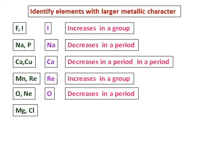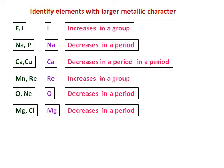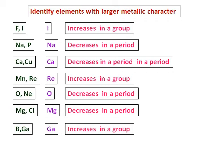Between magnesium and chlorine, magnesium is obviously the answer because magnesium belongs to group 2 and chlorine belongs to group 7. Always have a periodic table handy to answer these questions. Between boron and gallium, gallium has the larger metallic character because metallic character increases in a group.